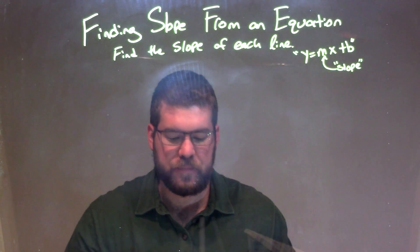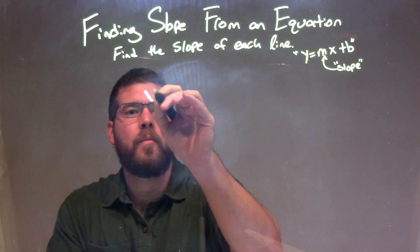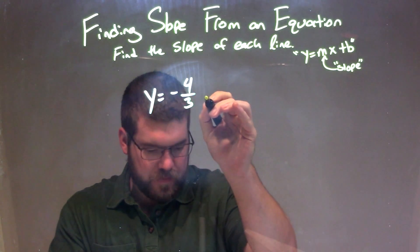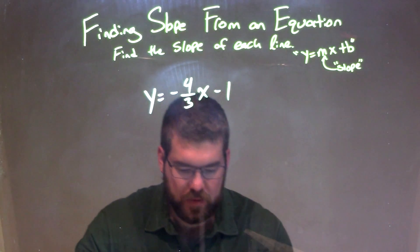We're going to find the slope of each line. So if I was given this equation, y equals negative four-thirds x minus one.